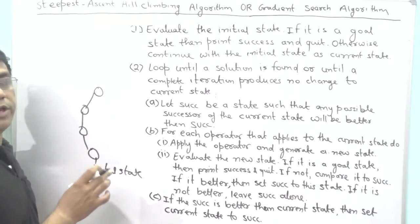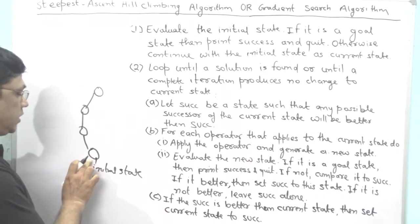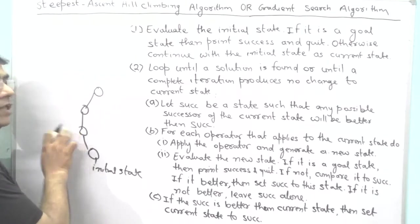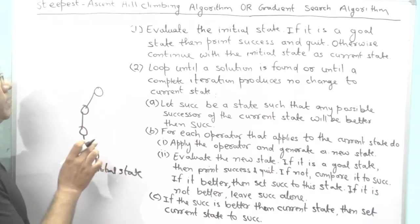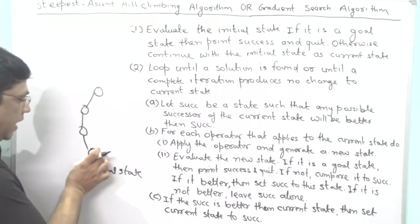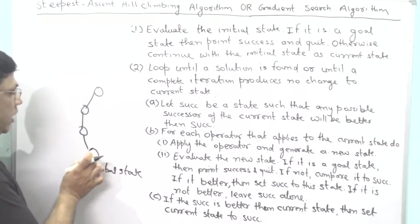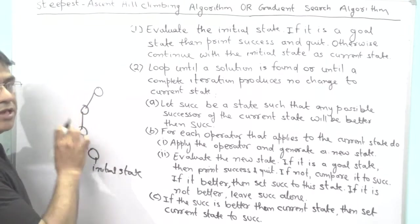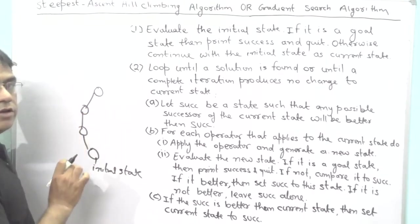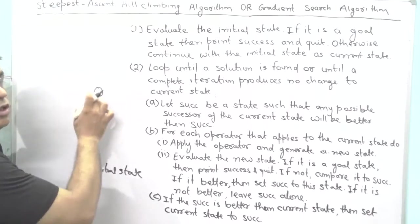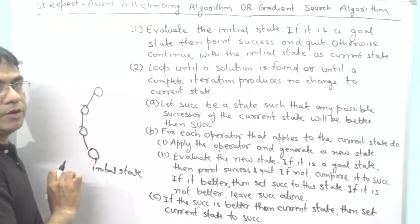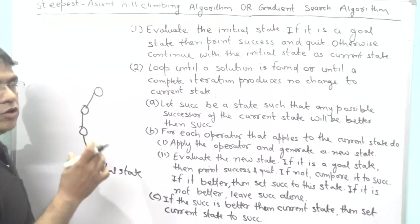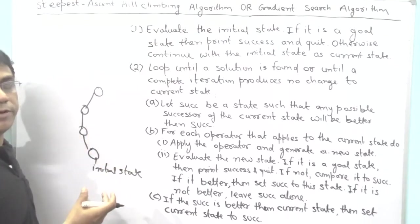As I mentioned in the basic hill climbing algorithm, the initial state checks just its immediate successor, and if it is better, it becomes the current state. But in the Steepest Ascent Hill Climbing Algorithm, the initial state checks all of its successor nodes at once. Whatever node has the best heuristic cost among all the paths, that node becomes the current state. At that time, you save time and speedily get the optimal solution.